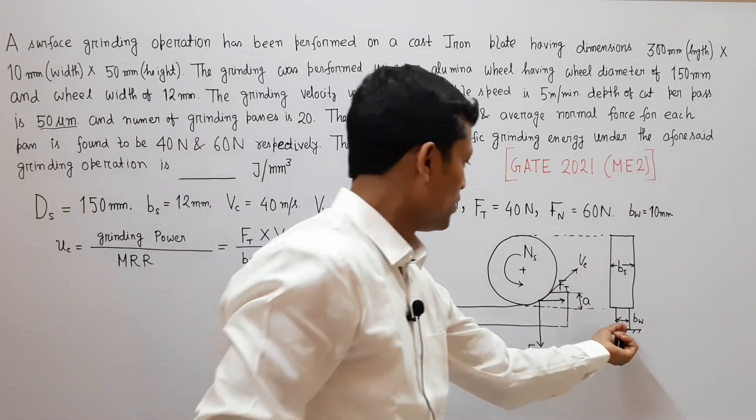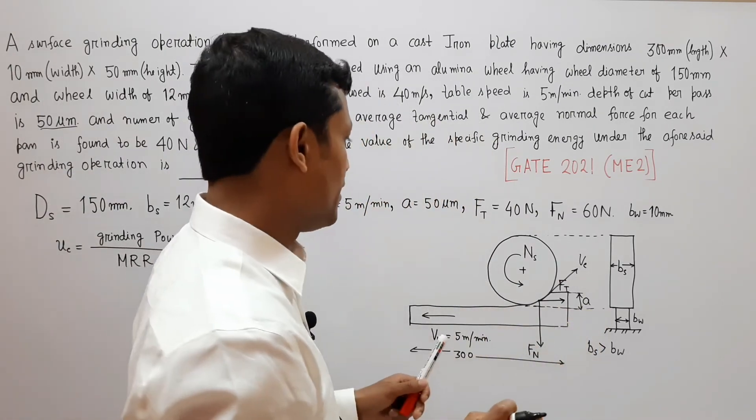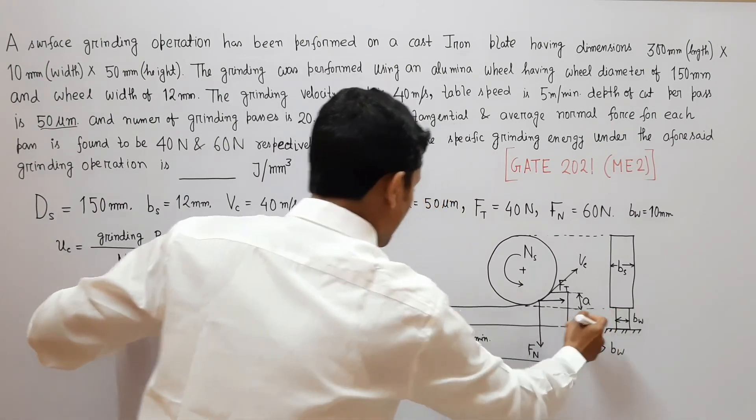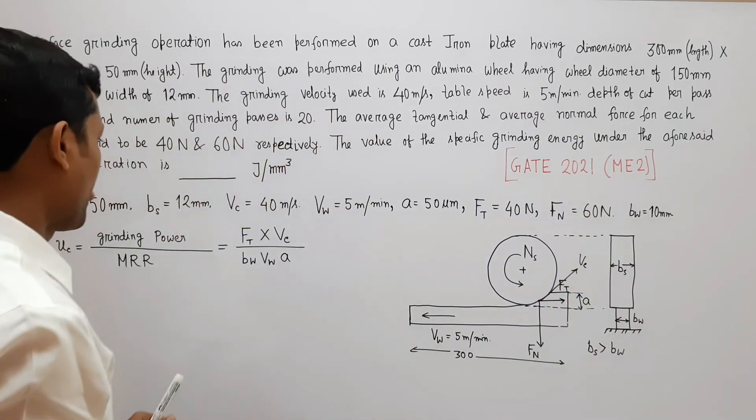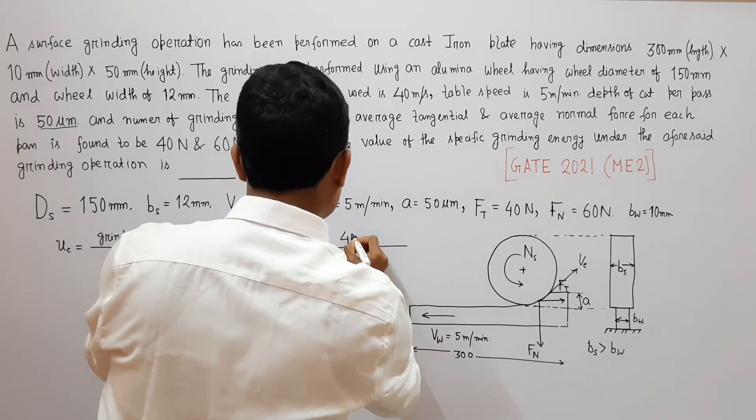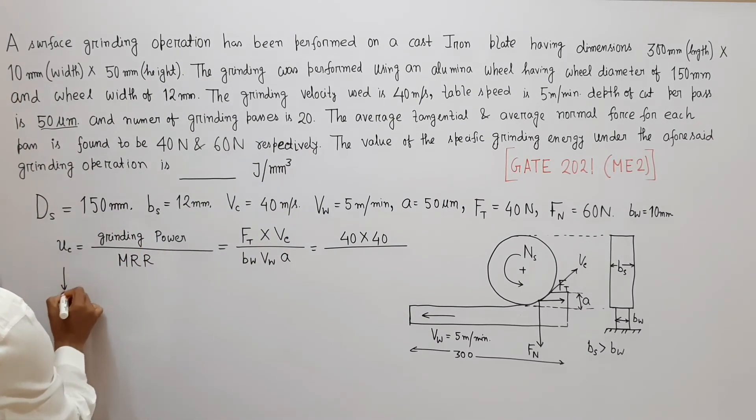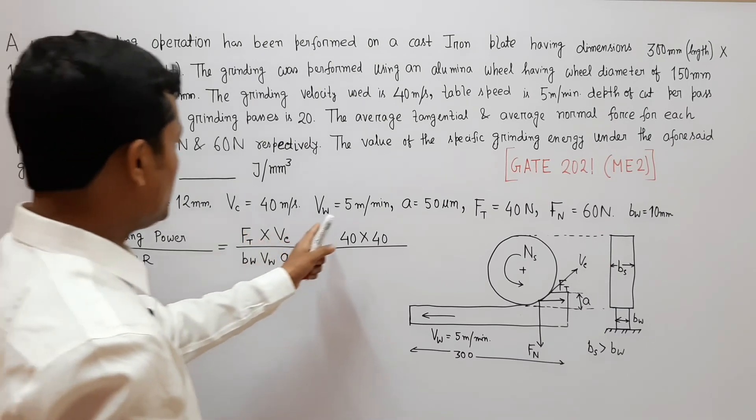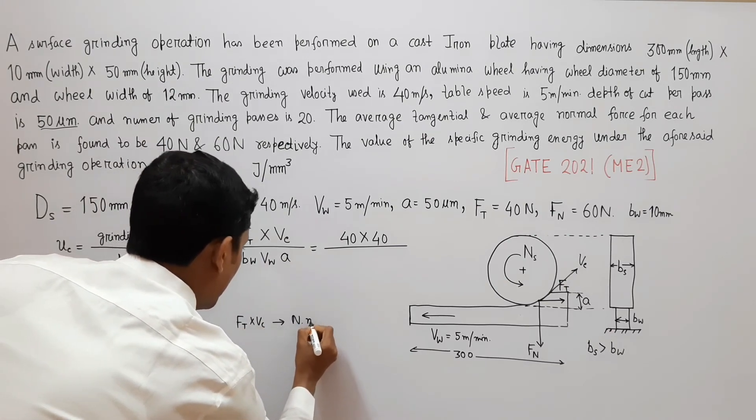Now our objective is to determine the specific grinding energy. So specific grinding energy u is what? Grinding power by MRR, material removal rate. Grinding power is tangential force into Vc. Vc is tangential velocity of the wheel at this point. And MRR will be B_w·V_w into a. Here B_s is greater than B_w, so material removal rate depends on width of the job only. So this type of grinding process is called plunge surface grinding process.